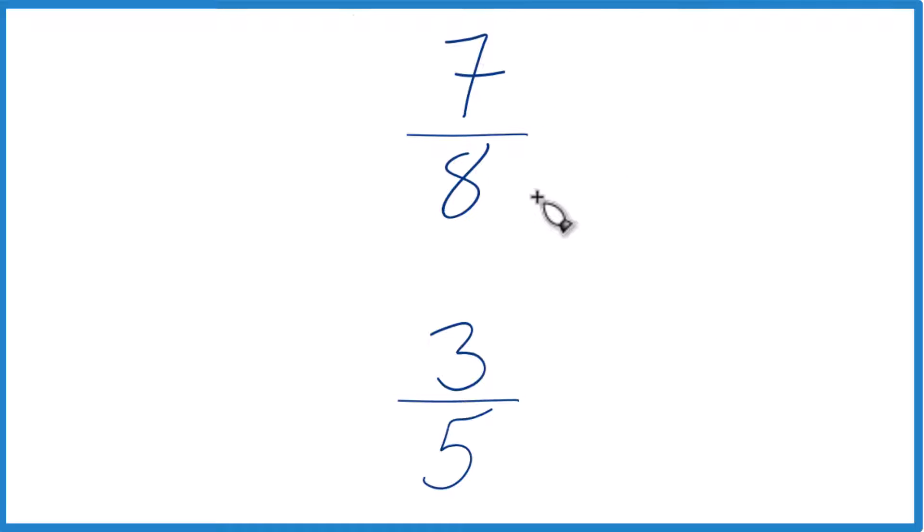Another way we could do this is find a common denominator. So if we had the same denominator, we'd just compare the numerators. We'd be able to figure it out that way.